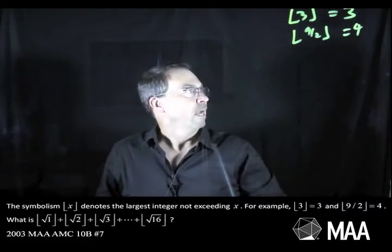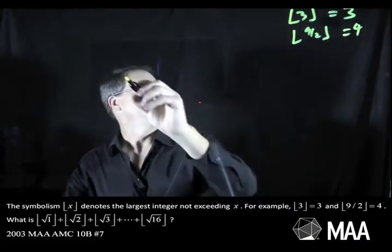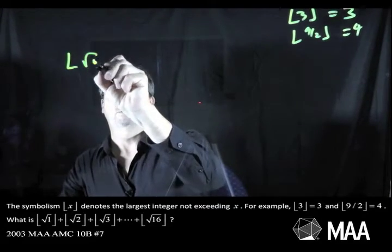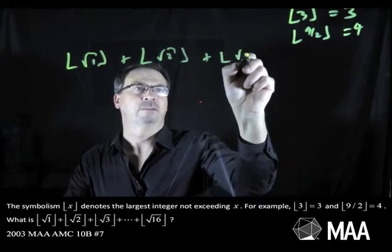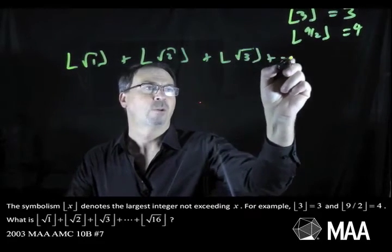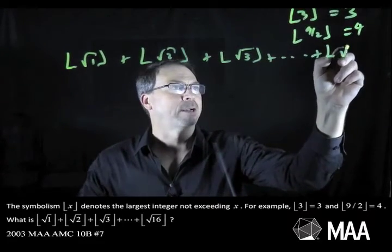I think I get that. And the question is, what is square bracket square root of 2 plus square bracket square root of 3 all the way up to square bracket square root of 16?